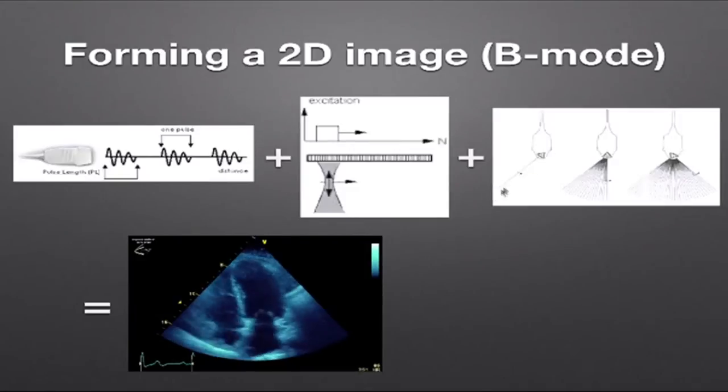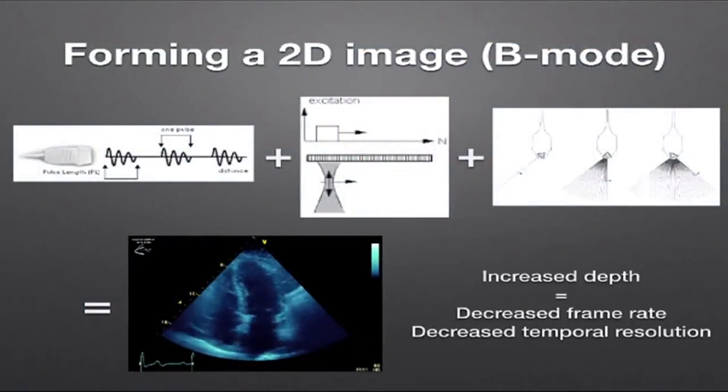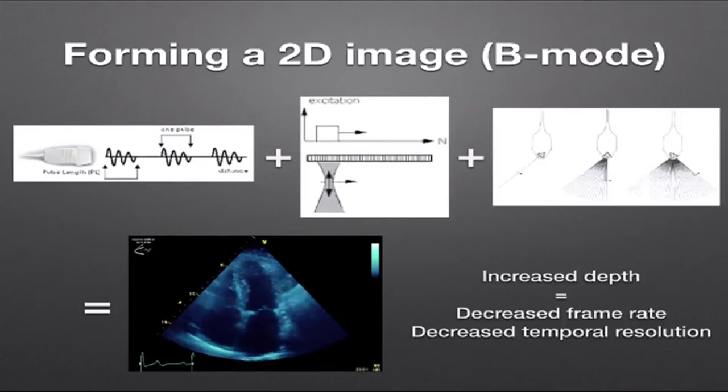The amount of time we must listen for an ultrasound pulse to return depends on the imaging depth — which is why depth is important in image optimisation. Greater depth means the machine must listen longer, leaving less time to generate frames per second. So increased depth decreases your frame rate, which we also describe as decreased temporal resolution, impairing our ability to measure structures accurately within a given cycle.